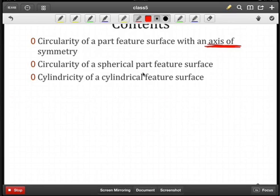We could also have circularity of a spherical part feature. And when I say spherical, it doesn't have to be an entire sphere. It could be a portion of the sphere, a hemisphere, or some quadrant of that sphere. And then lastly, we'll look at cylindricity of cylindrical part features.